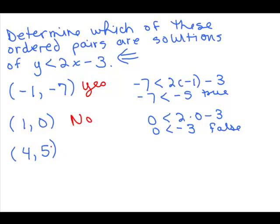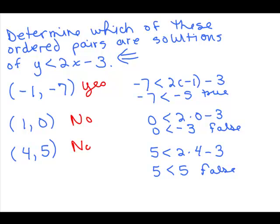For the last one, we put in 5 for y and 4 for x: 5 is less than 8 minus 3, which is 5. Is 5 less than 5? No — 5 is actually equal to 5, so this is a false statement as well. That ordered pair is not a solution. That's how you can tell whether an ordered pair is a solution.